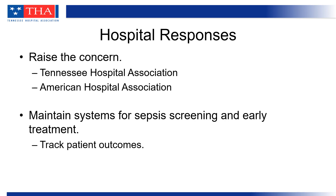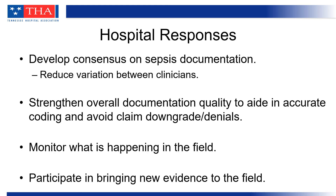Hospitals have raised concerns with the Tennessee Hospital Association and American Hospital Association, who are aware of this issue and are actively advocating for hospitals. They have maintained systems for sepsis screening and early treatment and are tracking patient outcomes to ensure no gaps in care. Some have developed consensus on sepsis documentation among their providers to reduce variation, done hand-in-hand with strengthening overall documentation quality to aid in coding accuracy and avoid claim downgrades and denials. They continue to monitor developments in this field, and some are participating in bringing new evidence to the field, which is greatly needed.